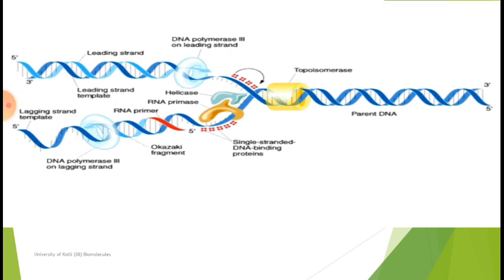During unwinding, different enzymes play their roles. Topoisomerase enzyme — also called gyrase — reduces the pressure that builds up ahead of the unwinding site. Helicase enzyme is majorly involved in the unwinding or unzipping of DNA. Single-strand binding proteins (SSBPs) stabilize and maintain the uncoiled double helical structure. Primase enzymes initiate the replication process by arranging different primers.